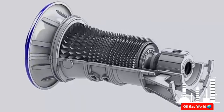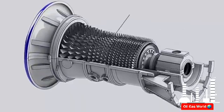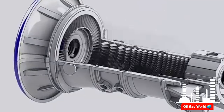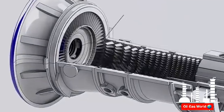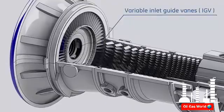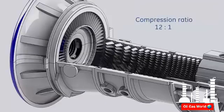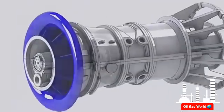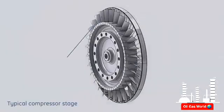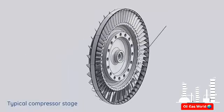The compressor is a 17-stage axial flow compressor with variable inlet guide vanes. Air is compressed to a pressure ratio of 12 to 1. Each stage consists of a set of rotating blades and a set of stationary stator blades.